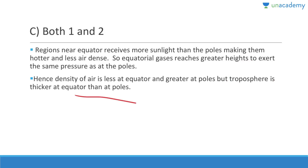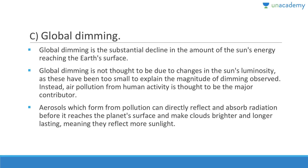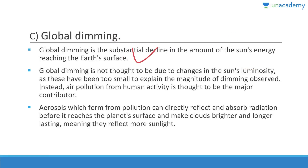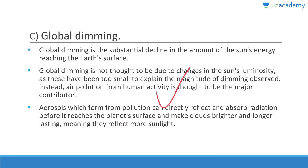The gradual reduction in the amount of global direct irradiance at the earth's surface is known as global dimming. Global dimming is a substantial decline in the sun's energy reaching the earth's surface — not due to changes in the sun's luminosity but mainly due to air pollution from human activity. Aerosols from pollution can directly reflect or absorb radiation and make clouds brighter and longer-lasting, reflecting more sunlight.